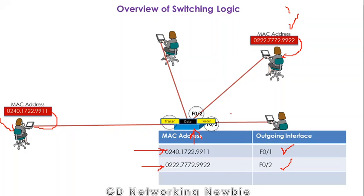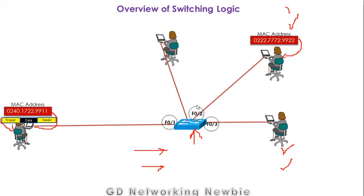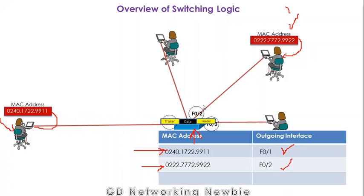These computers are connected to the switch. For example, this is the MAC address of this computer, and this user is connected to the switch. This is the MAC address of this node — the network interface card has this physical or MAC address, and that node is connected to the F02 interface or port of the switch.